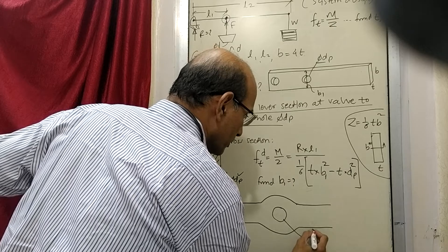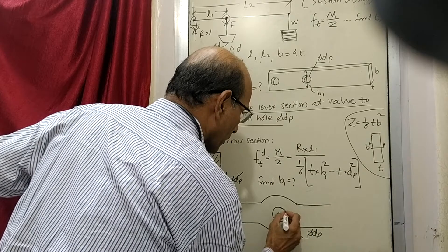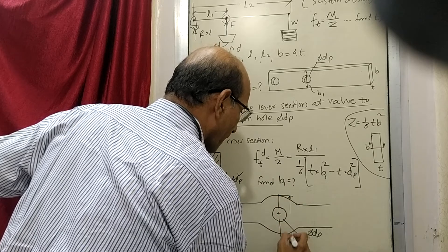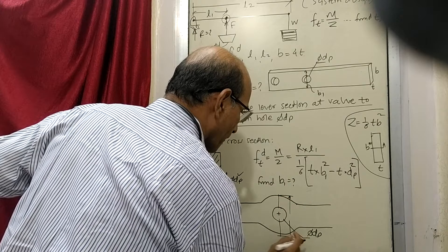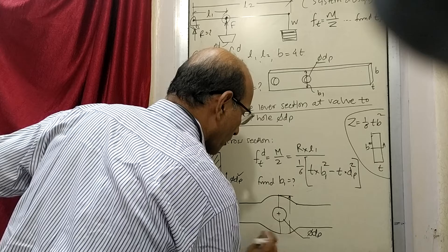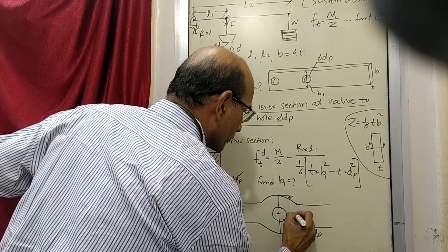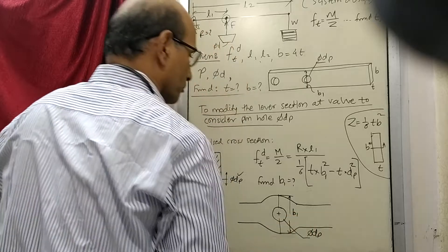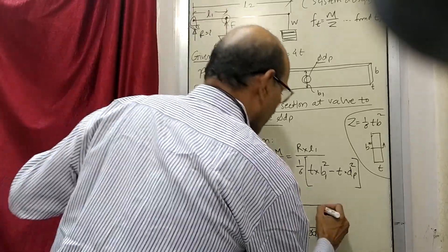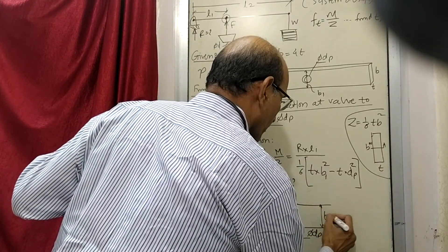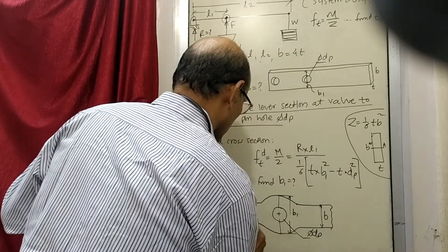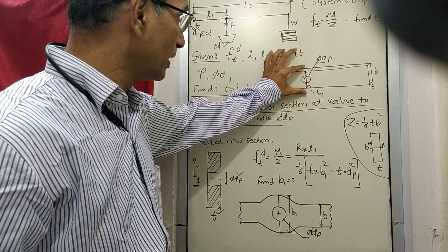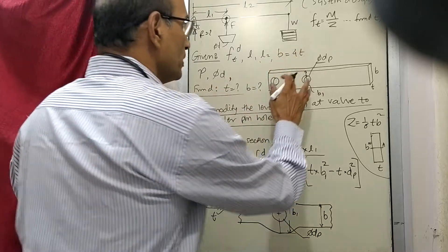This dimension is dp, and this is b1, and this is b. So the shape of the lever will be modified here so that b1 will be more than b.